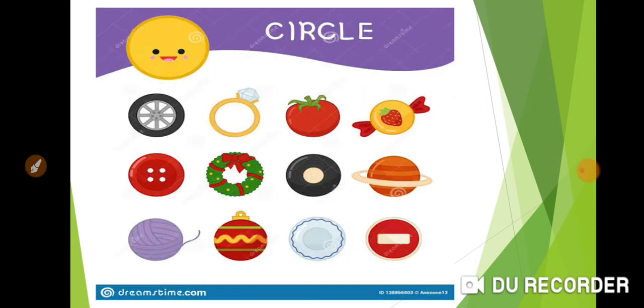See different types of circle things. Like wheel, ring, tomato, chocolate, ball, etc.